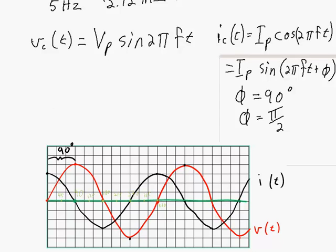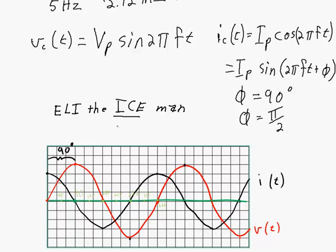Here's a silly mnemonic to help you remember if you don't want to go through all this derivation again — 'ELI the ICE man.' This mnemonic helps for both capacitors and inductors. For capacitors, we look at the ICE part: I is for current and E is for voltage. Current comes before voltage in a capacitor — that C is for capacitor. You'll also need to remember that the phase difference is 90 degrees; this mnemonic helps you remember which comes first, the current or the voltage.